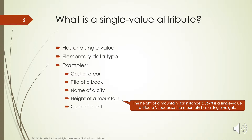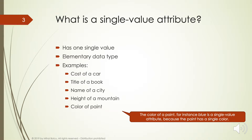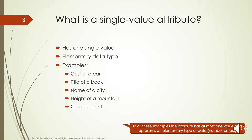The height of a mountain — for instance 5,367 feet — is a single-value attribute because the mountain has a single height. The color of a paint — for instance blue — is a single-value attribute because the paint has a single color. In all of these examples, the attribute has at most one value and represents an elementary type of data: a number or text.